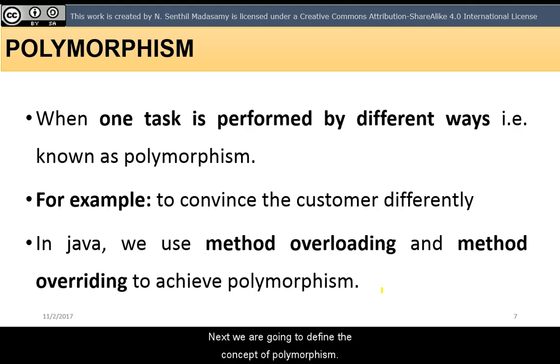Next, we are going to define the concept of polymorphism. When one task is performed by different ways, it is known as polymorphism. For example, to convince the customer differently, to draw something—for example, shape or rectangle, etc. In Java, we use method overloading and method overriding to achieve polymorphism.